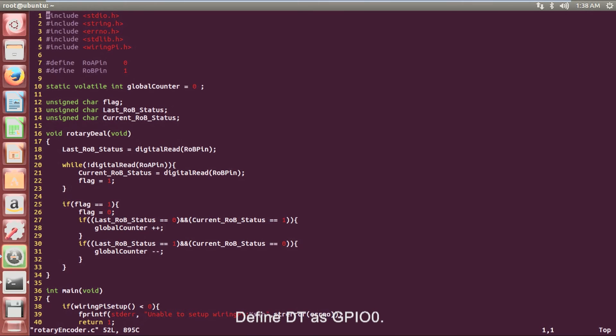Define DT as GPIO0. Define CLK as GPIO1. Define a global variable global counter to count.